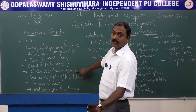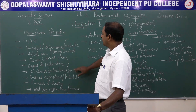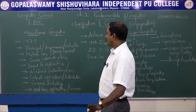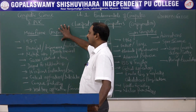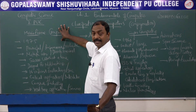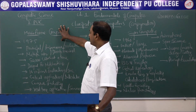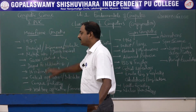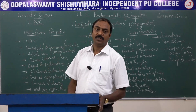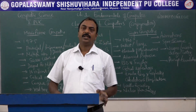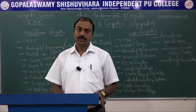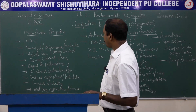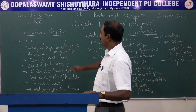Mainframe computers process 16 million instructions per second, giving you a sense of their speed. Being very large in size and supporting 50,000 users, they are set up in one location where users work with dumb terminals.